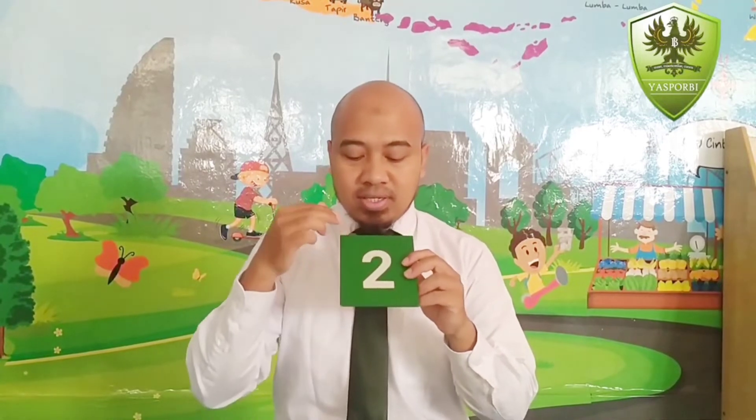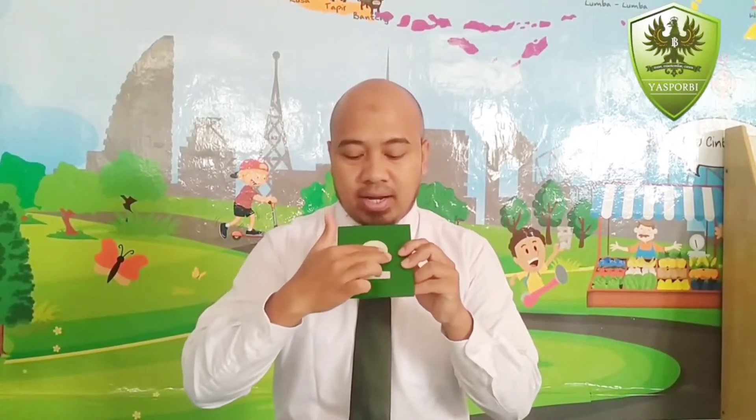How to make number two? It is easy — just follow the line, and then go down, go back. Make a little circle, go down, and go back. This is number two. Next, the last number — number three.